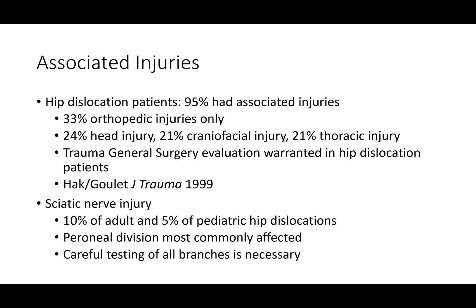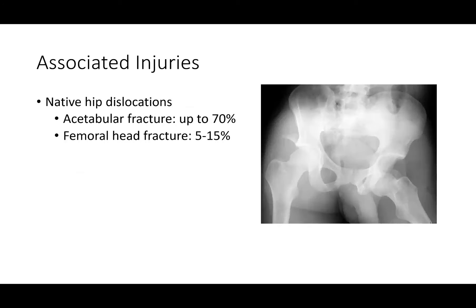In hip dislocation patients, 95% have associated injuries. In one particular study: 24% head injuries, 21% craniofacial injuries, 21% thoracic injuries. Many times these are multiple trauma patients who require evaluation by a general surgery trauma team. Sciatic nerve injury happens in 10% of adults and 5% in pediatric hip dislocation. The peroneal division is most commonly affected, so patients get foot drop but not necessarily loss of plantar flexion. You can also get an acetabulum fracture — often a posterior wall fracture — and in fewer cases, a femoral head fracture.